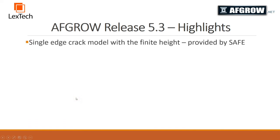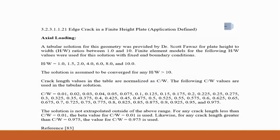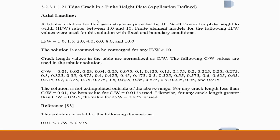Another classic model that was added in the 5.3 release is the single edge crack model with a finite height. The solution for this model was provided by SAFE engineering. The height to width ratio H over W ranges between 1 and 10. The crack lengths for this table solution are normalized by taking the ratio of the crack length over the width of the plate. The values you see listed on the screen were used to create the solution.